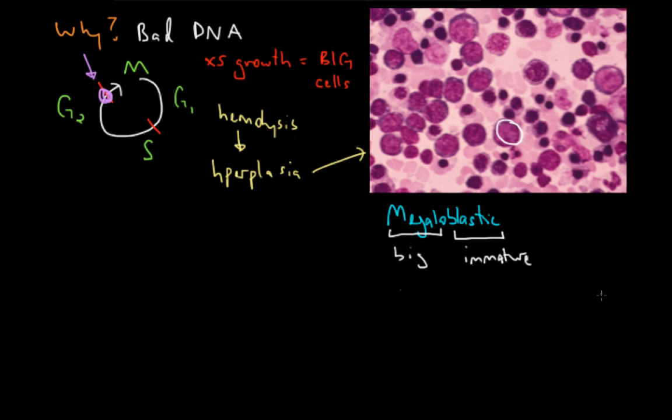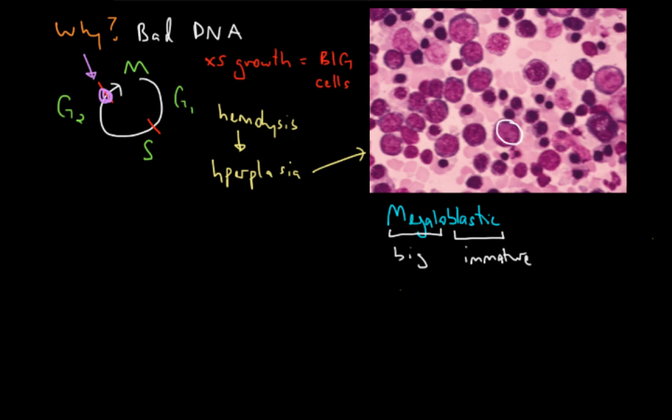Now so far in megaloblastic anemia, we've been talking as if it only referred to red blood cells. But since the mechanism is bad production of DNA, it affects all cells equally, including the other white blood cells. In this picture, you can see what's known as a hypersegmented poly.